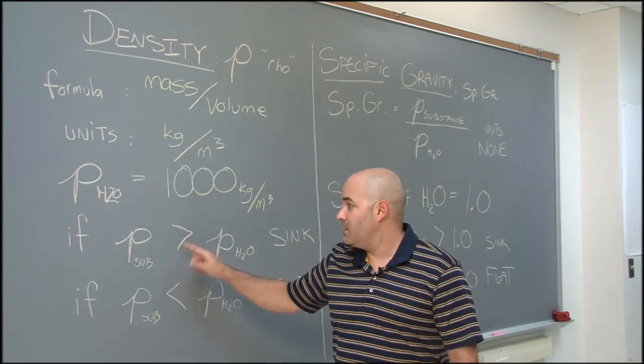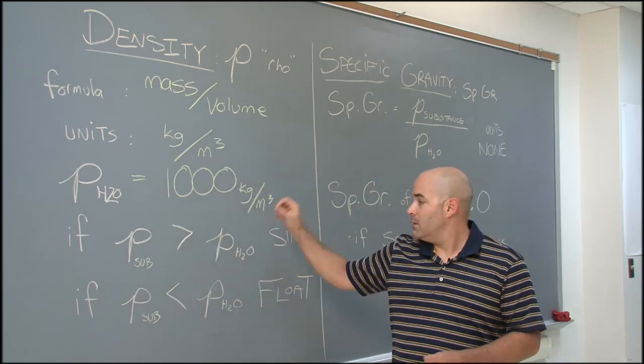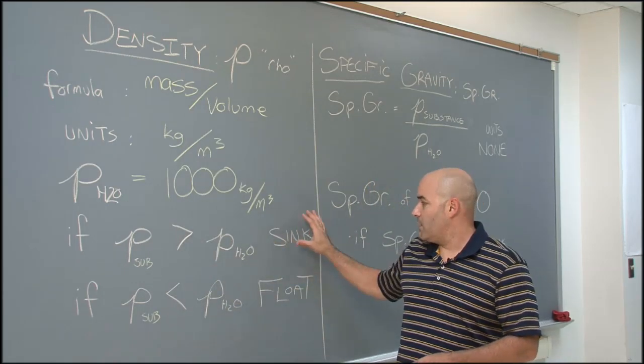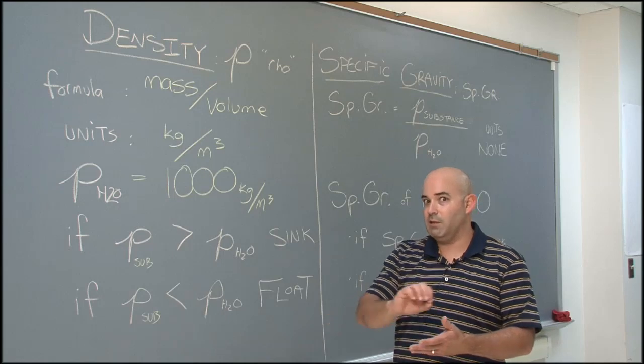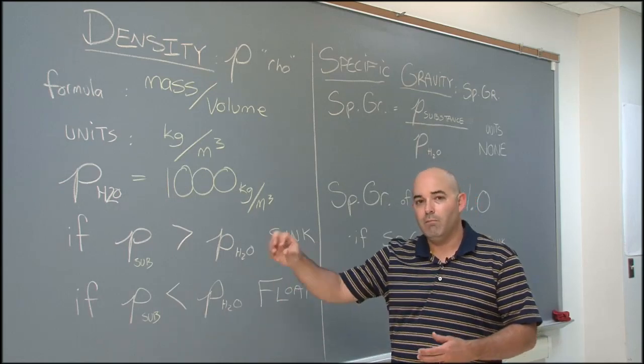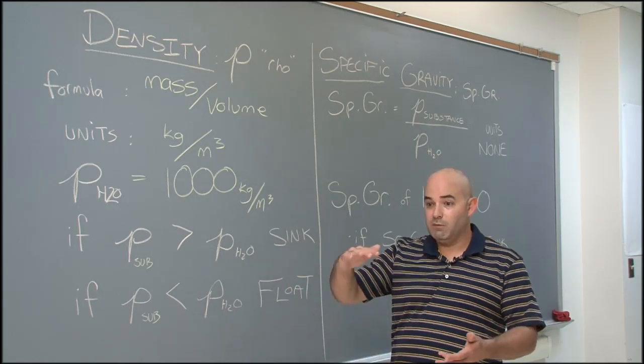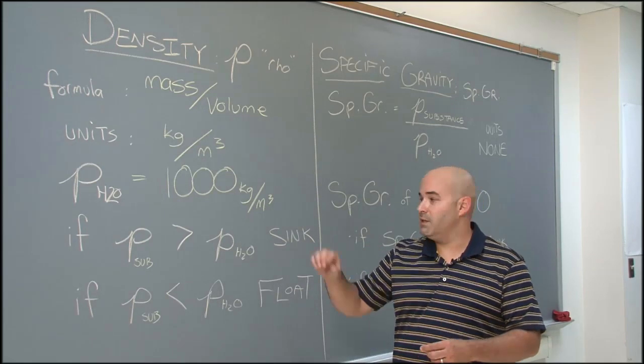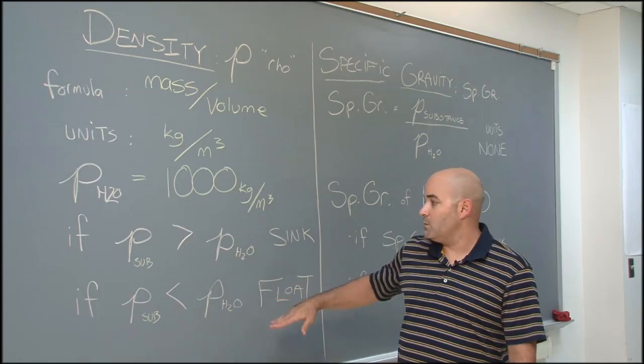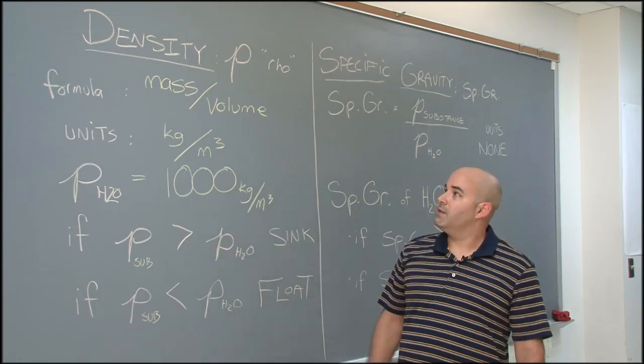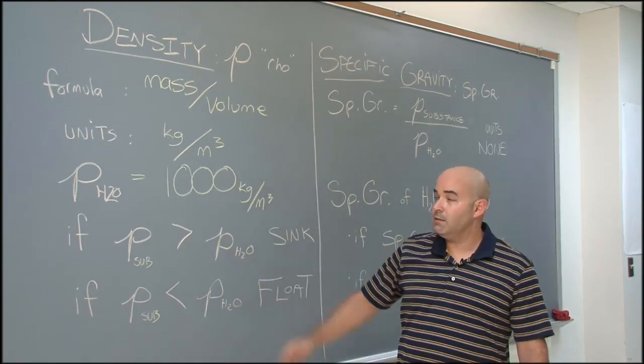If the density of a substance is greater than the density of water, we automatically know it sinks. This is a cool little shortcut when we're solving problems later and it says find the density of balsa wood. Well, we know balsa wood floats, so it better have a density less than water. If it's less than water, it floats. If it's greater than water, it sinks. That's density summarized.